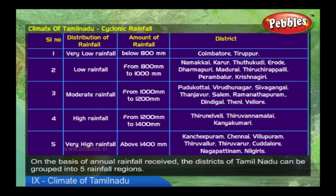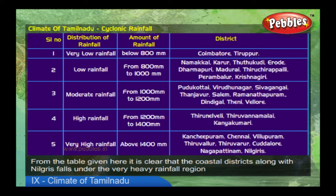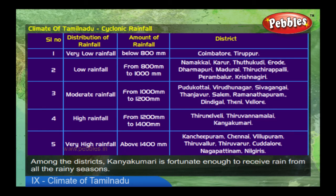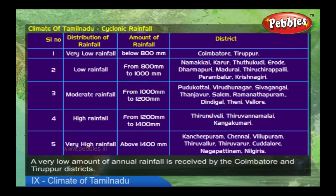On the basis of annual rainfall received, the districts of Tamil Nadu can be grouped into five rainfall regions. From the table, it is clear that coastal districts along with the Nilgiris fall under the very heavy rainfall region, with annual rainfall of more than 1400 millimeters. Among the districts, Kanyakumari is fortunate enough to receive rain from all rainy seasons. A very low amount of annual rainfall is received by the Coimbatore and Tiruppur districts.